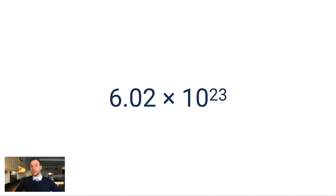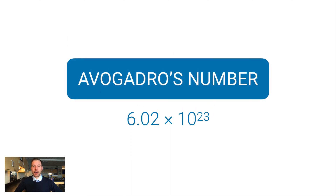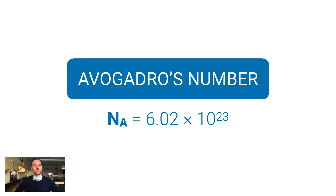This number also goes by a different name — it's called Avogadro's number, based on the scientist Amadeo Avogadro who did work on this. It's sometimes abbreviated as a capital N with a subscript capital A. The N stands for number and the A stands for Avogadro.